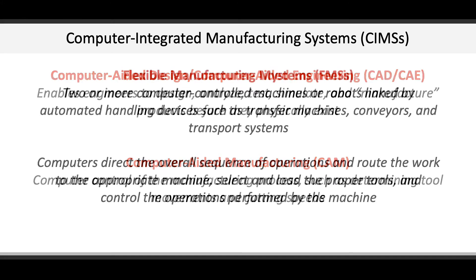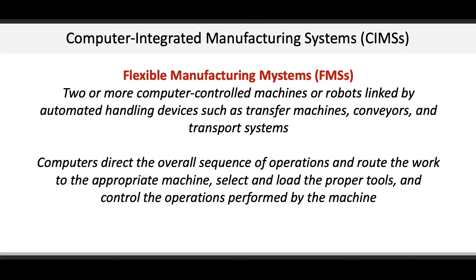Finally, CIMS can also include flexible manufacturing systems, where two or more computer-controlled machines or robots are linked by automated handling devices such as transfer machines, conveyors, and transport systems. Computers direct the overall sequence of operations, route the work to the appropriate machine, select the proper tools, and control the operations performed by the machine.